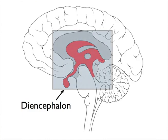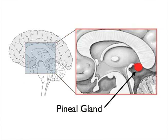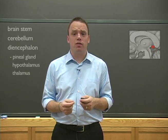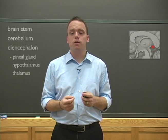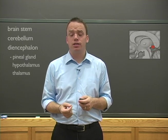The first part of the diencephalon that we'll talk about is the pineal gland, which is a very small gland located right at the center of the brain. Now I said it's small because it literally is about the size of a grain of rice. But it plays a very important role in several functions. Most importantly, it helps regulate the sleep-wake cycle by producing a substance called melatonin.